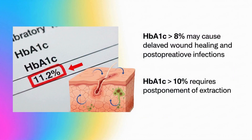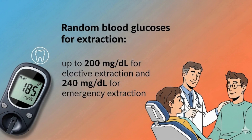Patients with a percentage higher than 8% may suffer from delayed wound healing and postoperative infections. In patients with more than 10%, extraction should be postponed until better glycemic control is achieved. In terms of random blood glucose, extraction can be done up to 200 mg/dL for elective extraction and 240 mg/dL for emergency extraction.